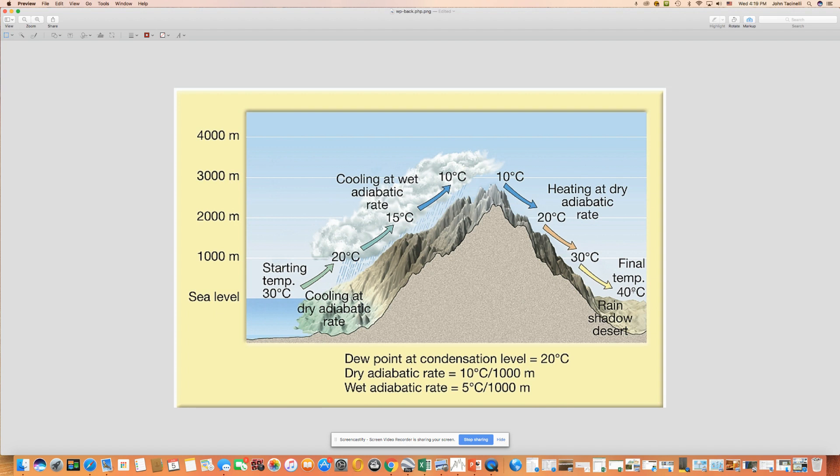As you get down the other side, you're going to have very warm, dry conditions. And that's where you usually have something called a rain shadow desert. So that's the example.